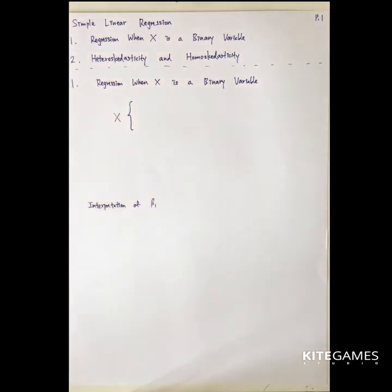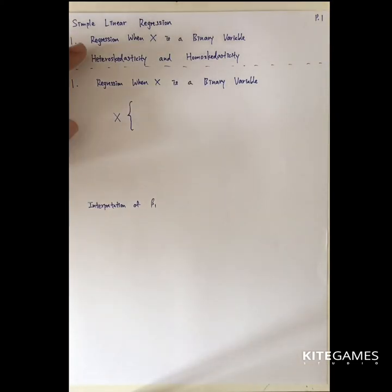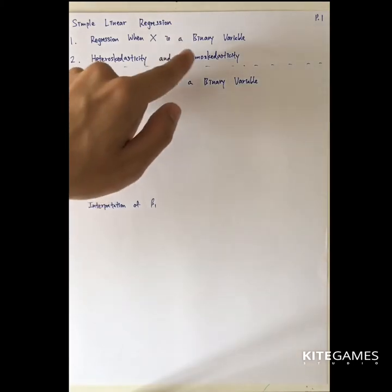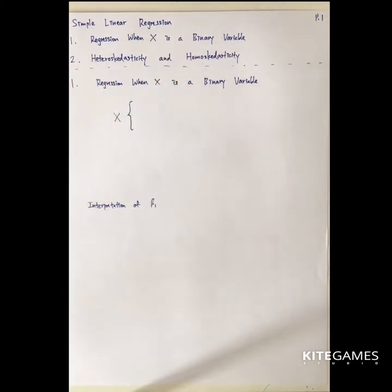In this simple linear regression video, we talk about a special case of linear regression, which is called regression when x is a binary variable, or we call it dummy variables.